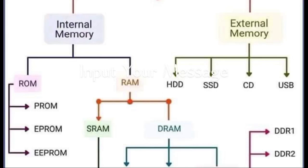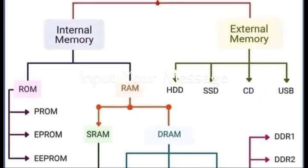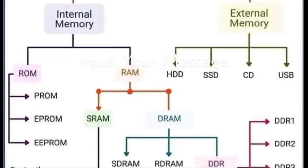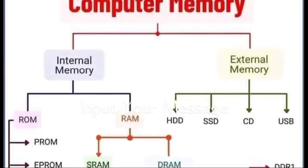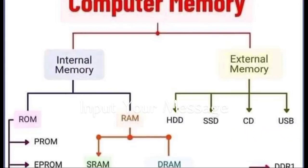The third part of external memory is CD — compact disk. The fourth is USB, which is also part of external memory. Pen drives are also part of external memory. DVD — everybody knows about DVD — it is a disk-type storage device, just like CD. So HDD, SSD, CD, DVD, USB, and pen drive — all are external memory.